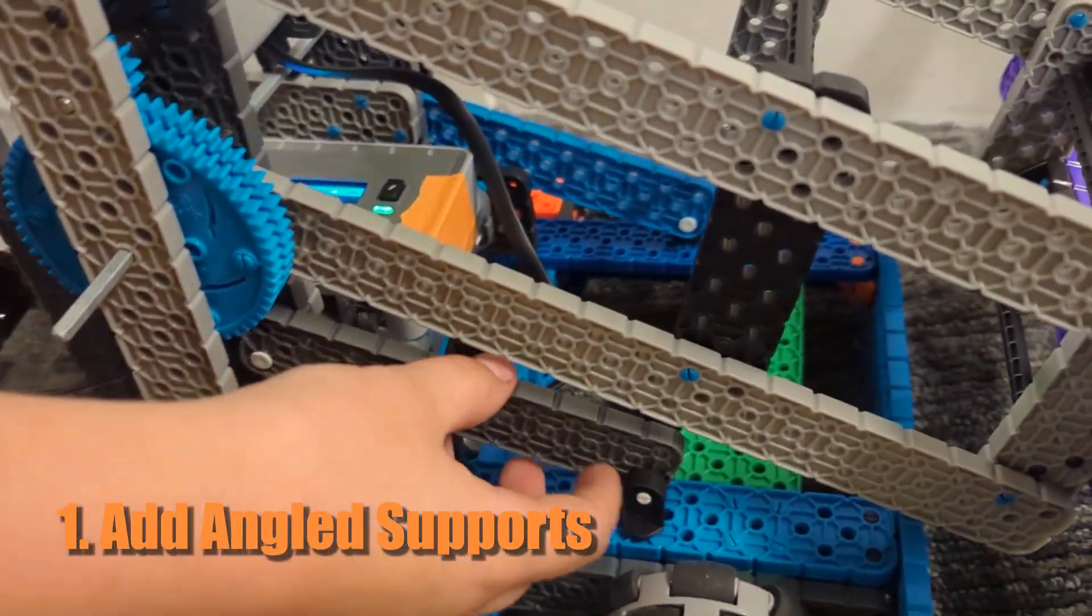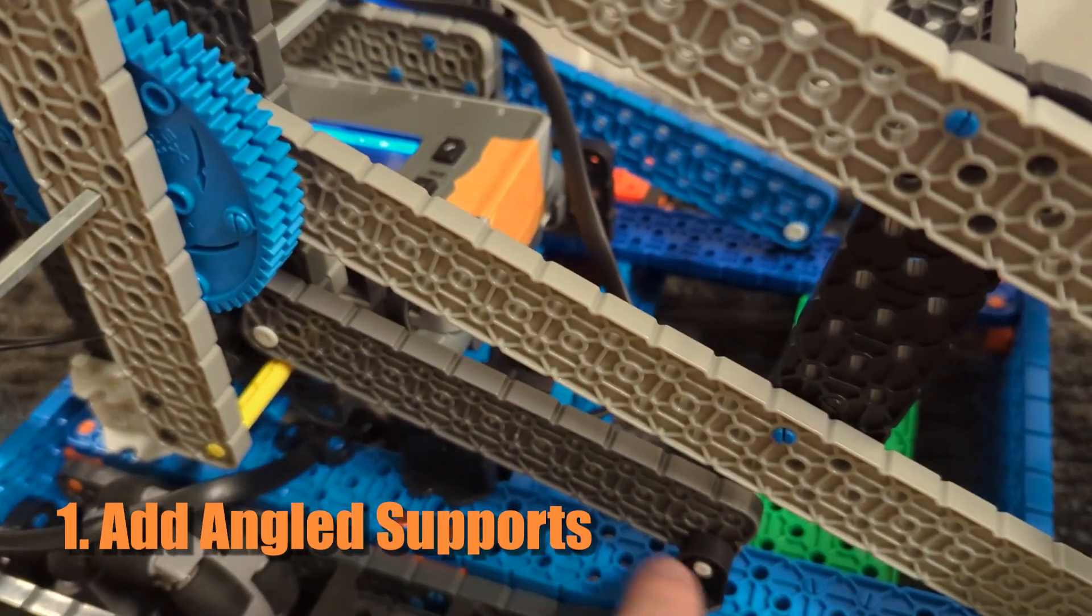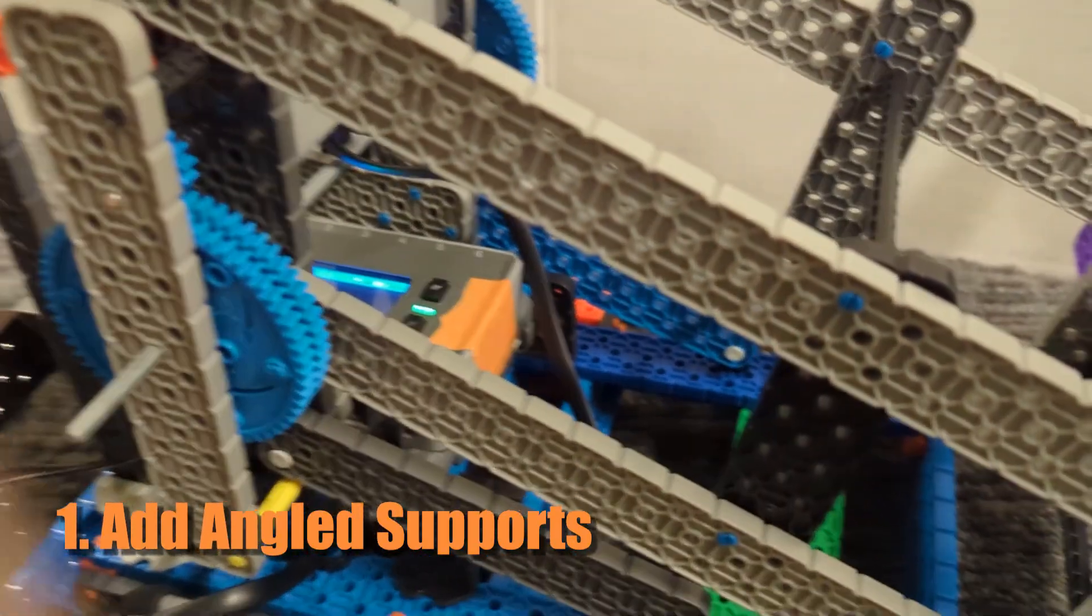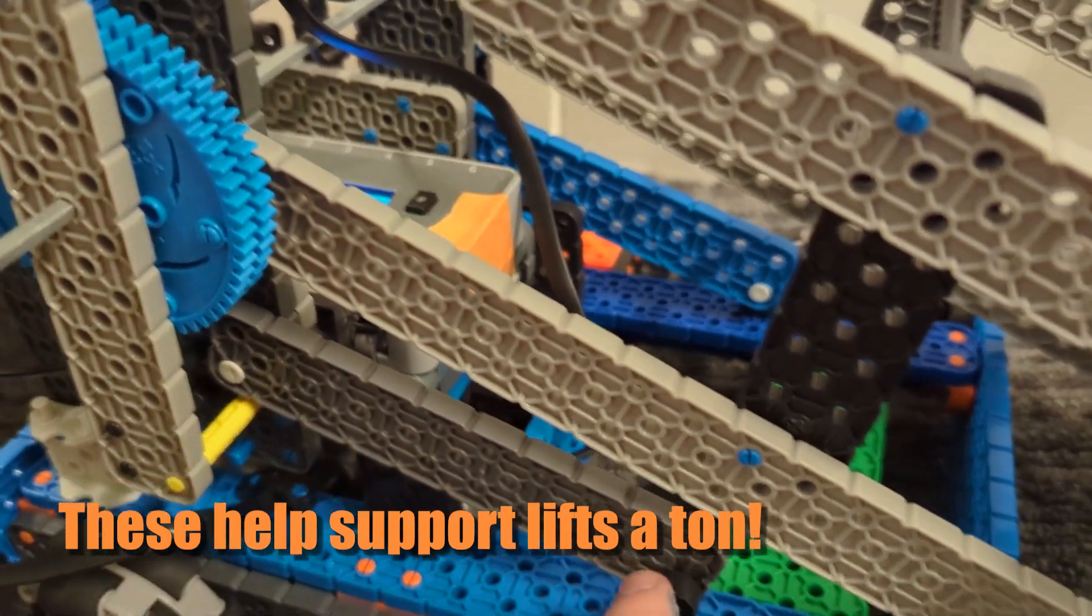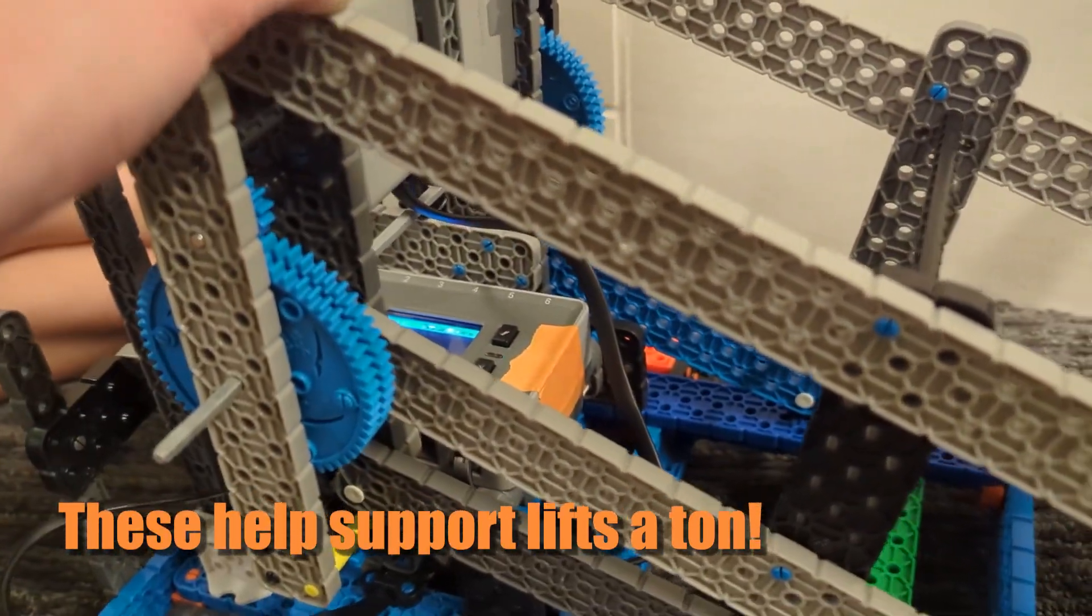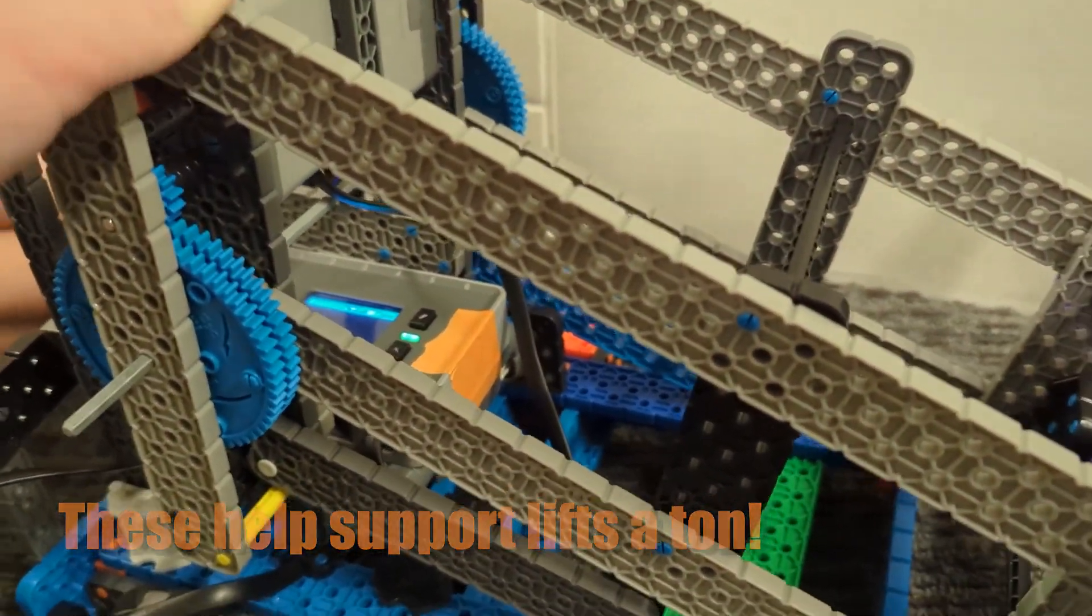What's one thing that you added that helped keep it supported? I added these triangular pieces. If you have a triangle, that's going to be a lot stronger than if you just have a square or a rectangle shape. He just attached it here to here, that way this can't move back and forth.